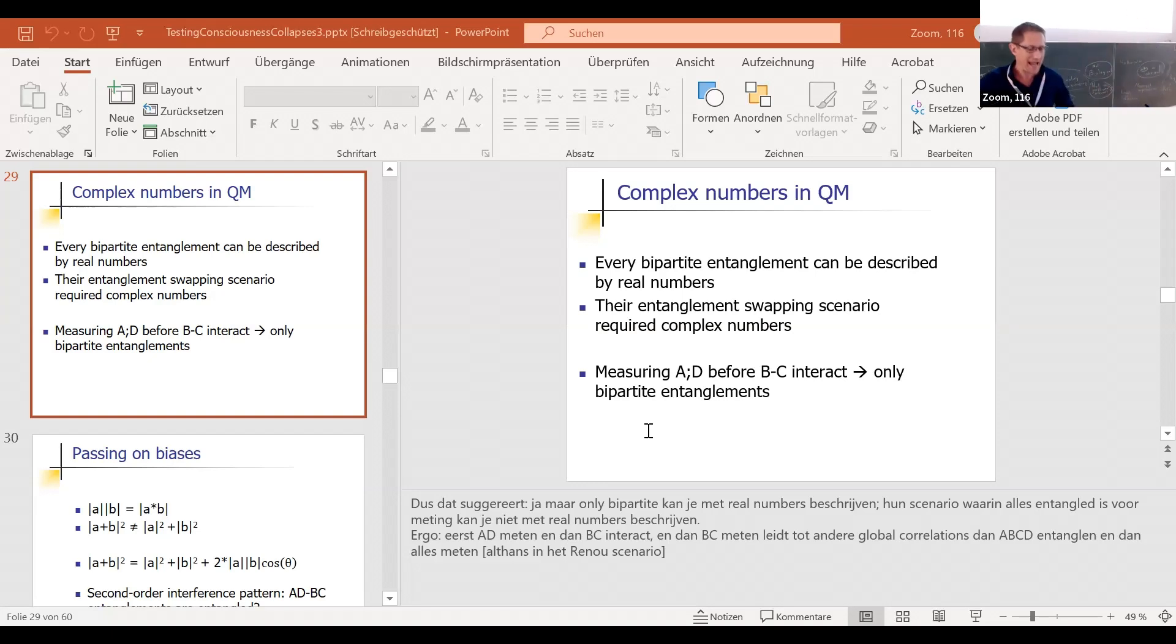So we already know the answer cannot be neither. Well, you might say then it's both. But the problem is if you experience both, it requires having information from state C2 and C2 prime and experiencing both of them. But you can see, again, they're outside of each other's light cones. There cannot be a causal relationship between these, so it cannot be both.